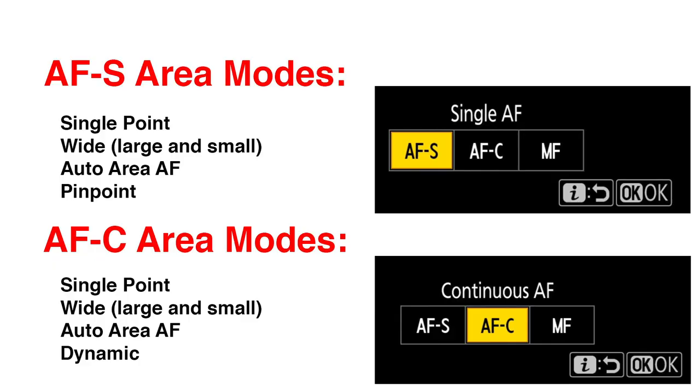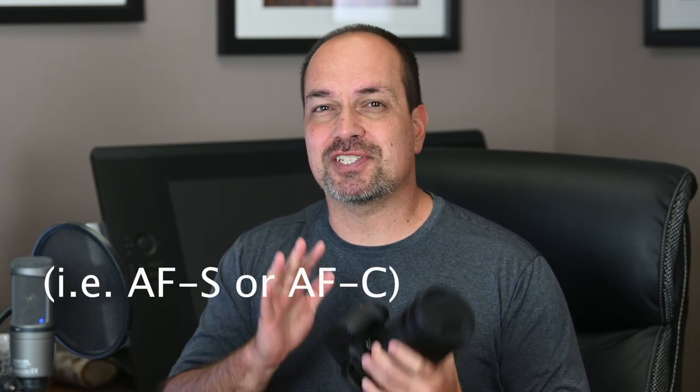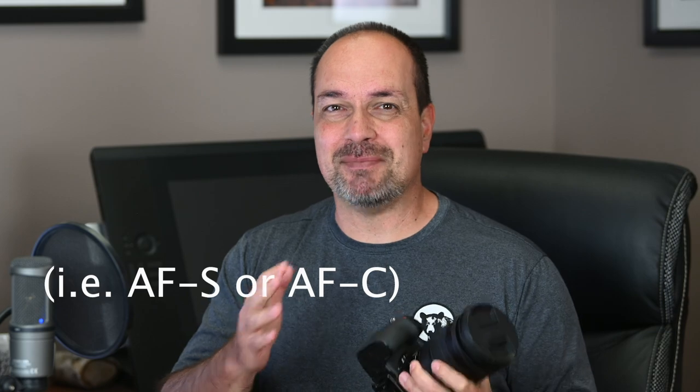There are a few additional side notes. Not every AF area mode works in both AFS and AF-C. For example, Pinpoint AF only works in AFS mode and Dynamic only in AF-C mode. If you have a Z50, you'll notice an option called AFA, which lets the camera decide whether to use AFS or AF-C. In my experience, it's better just to pick the proper mode yourself, because sometimes AFA can get it wrong. We'll talk about how to change focus modes and AF area modes in just a few moments.